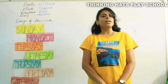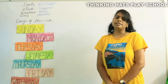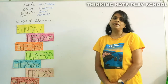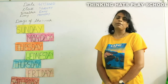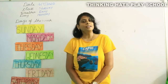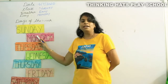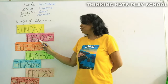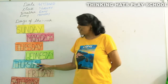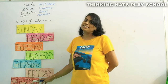It's rainy. Now let's learn some days of the week. How many days are there in a week? There are 7 days in a week: Sunday, Monday, Tuesday, Wednesday, Thursday, Friday, and Saturday.